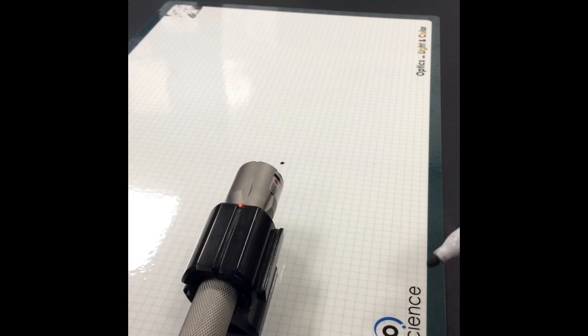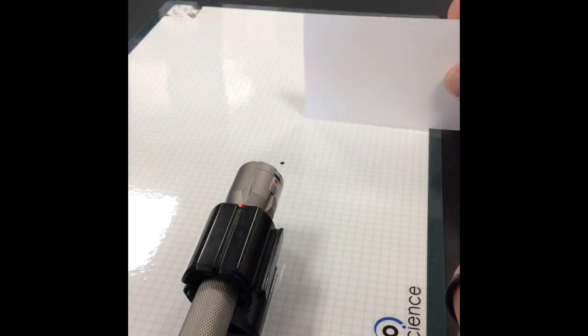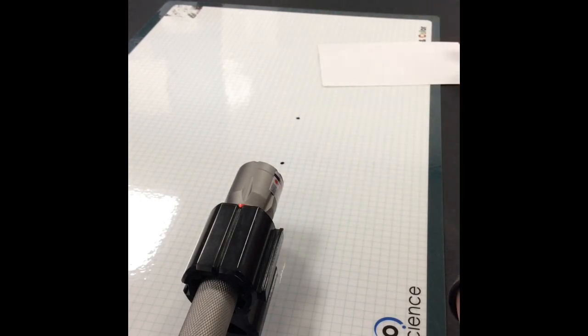Additionally, you can mark using an expo marker the points at which the laser beam hits the card just so you're sure you're on that same line.